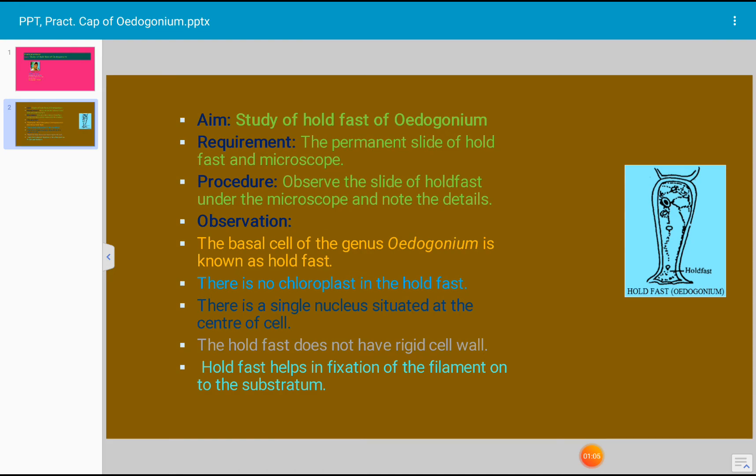In observation, what we have to write about the hold fast is that the basal cell of the genus Oedogonium is known as hold fast, and there is no chloroplast in the hold fast. Hold fast cell is without chlorophyll.